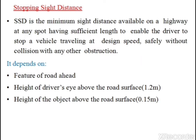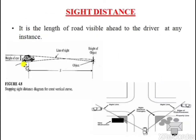Sight distance depends upon a few factors: the feature of road ahead, height of driver above the road surface, and height of object above the road surface. The feature of road ahead applies to the horizontal alignment and vertical profile of the road. When the road profile has a vertical curve, the line of sight of the driver will be obstructed by the curve.